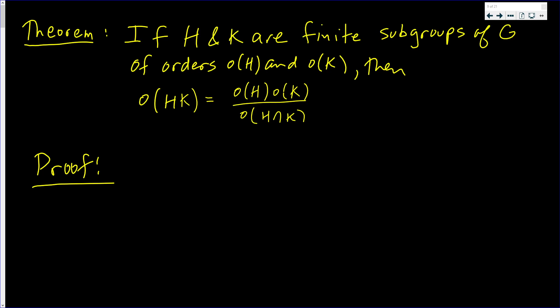Now I'm going to make a claim that many duplications come from H intersect K — that is, from the elements in H intersect K.